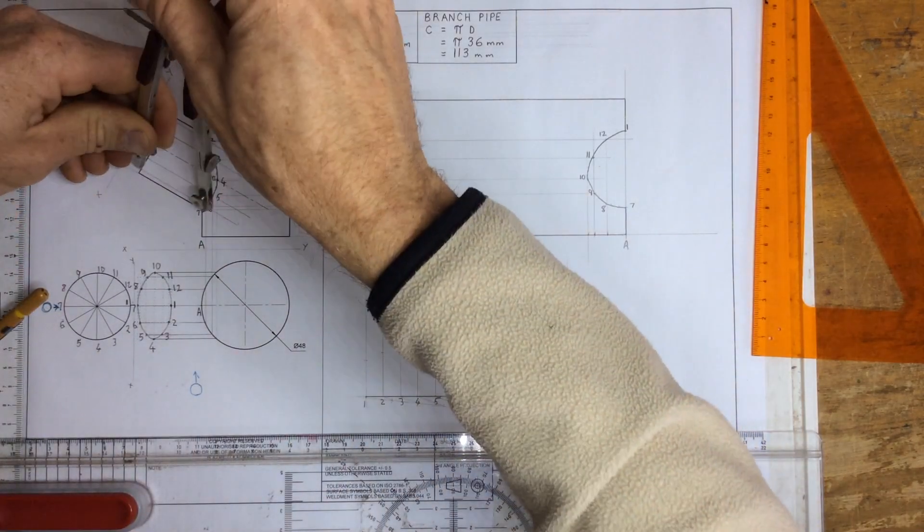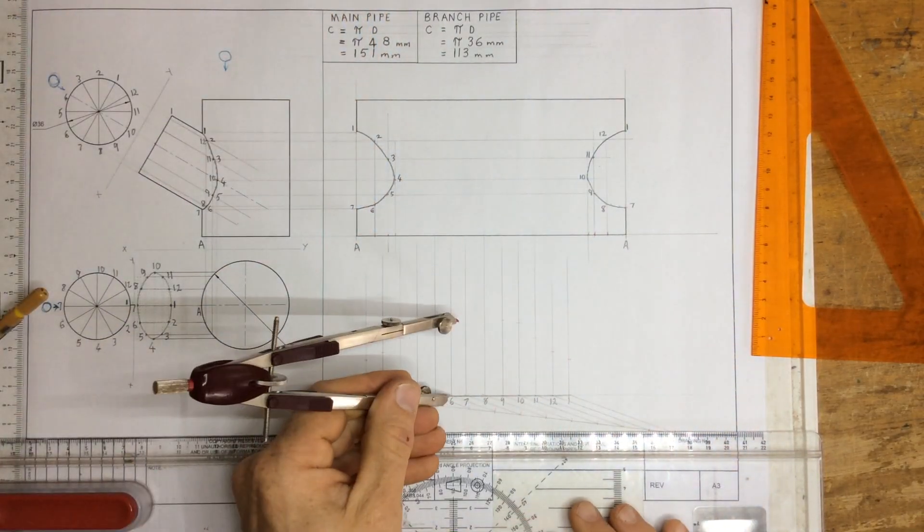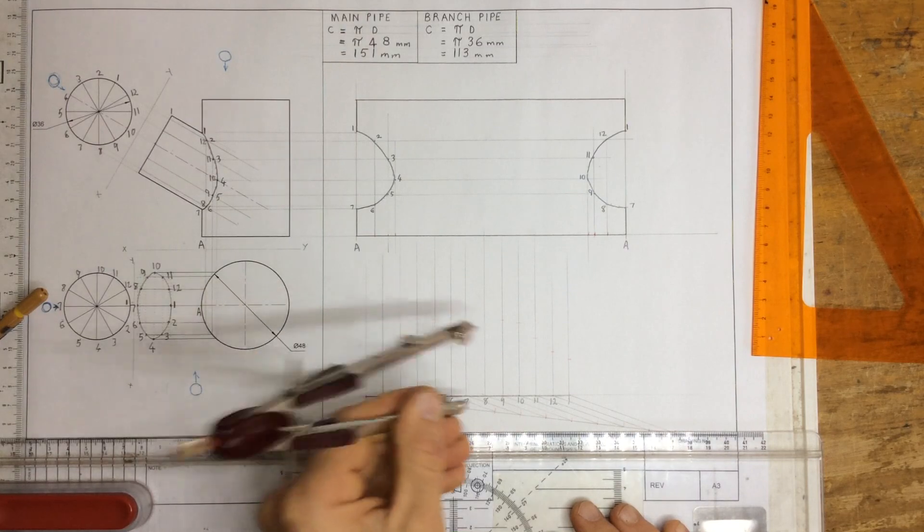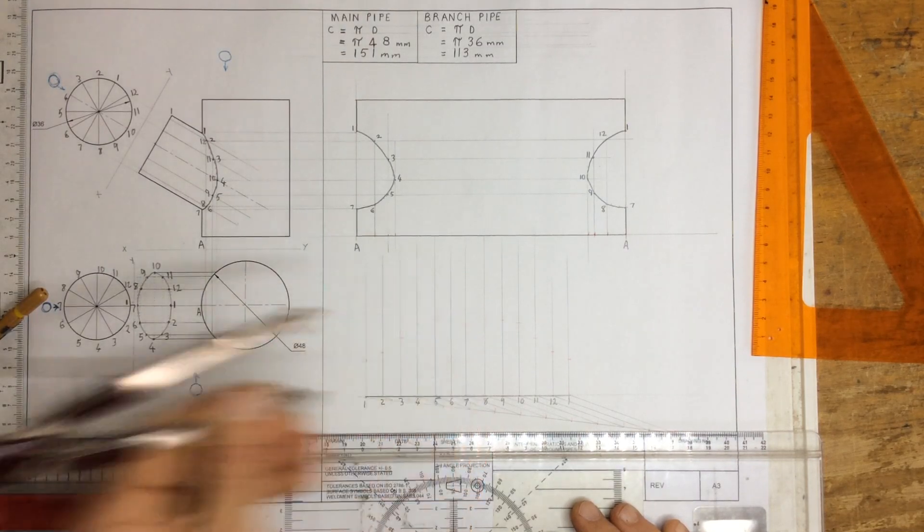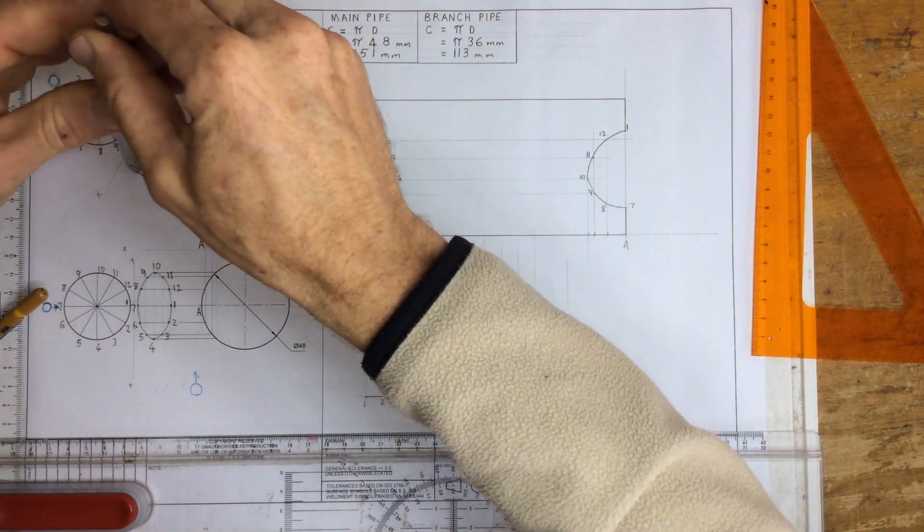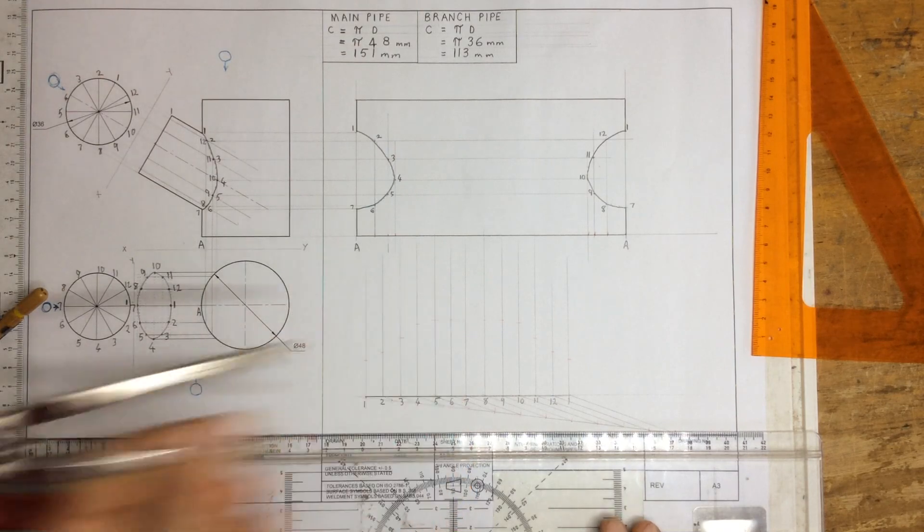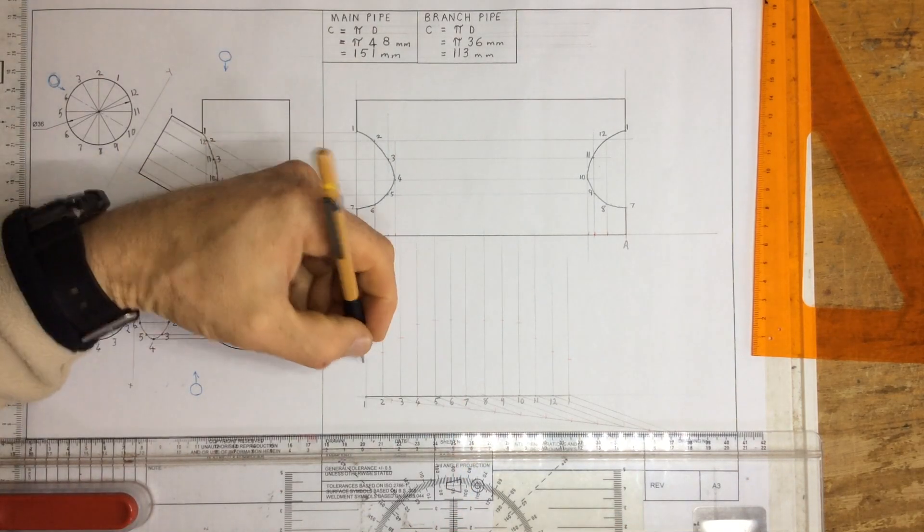And here I can wind this back a little bit to 8 and 6, 6 and 8, and let's get 7. That over there, and I now have those little marks.